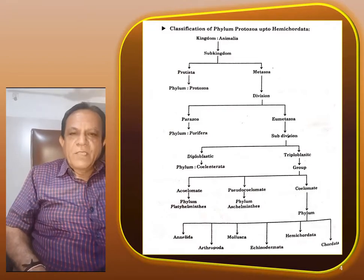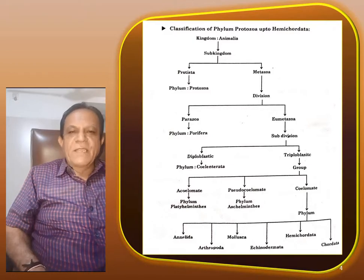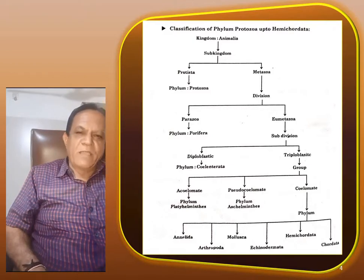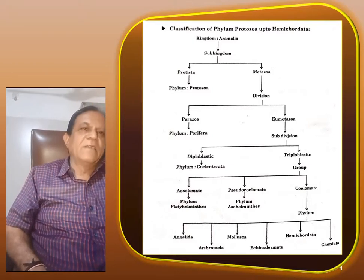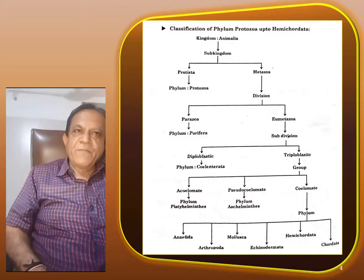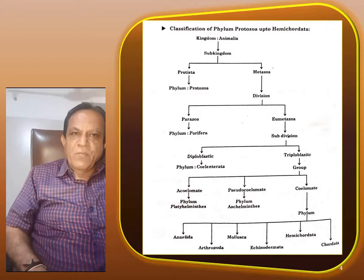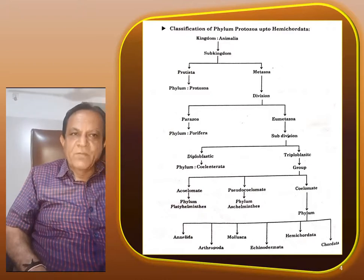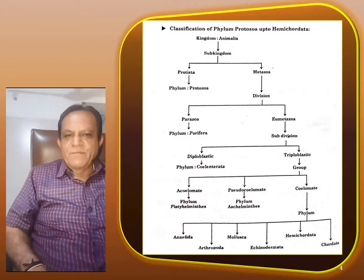Now we want to classify the Platyhelminthes phylum. So where is the phylum in this chart? Kingdom Animalia, Sub-Kingdom Metazoa, Division Eumetazoa, Sub-Division Triploblastic, Group Acoelomate, Phylum Platyhelminthes. So up to this level you have to classify.